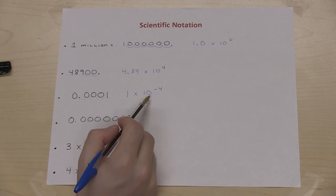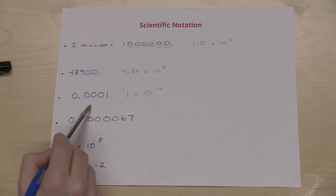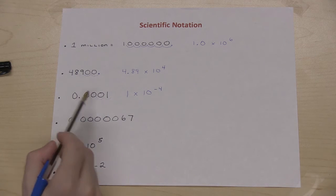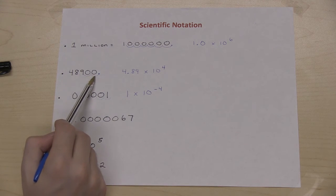So an easy way to remember that is if I have a negative exponent, that means that my number is going to be less than 1, and if I have a positive exponent, that means that my number is bigger than 1.